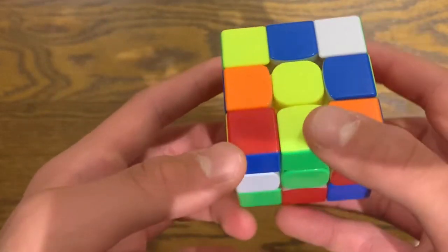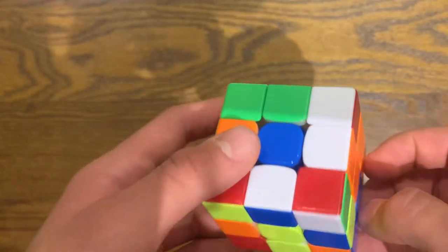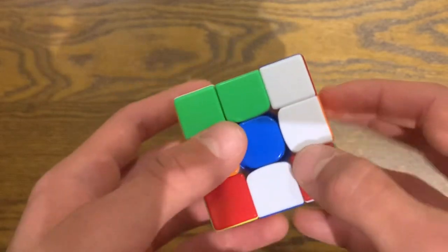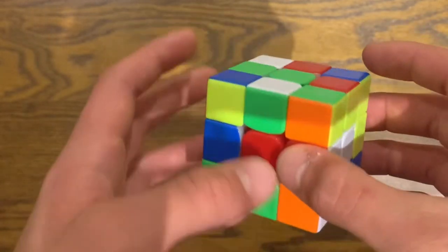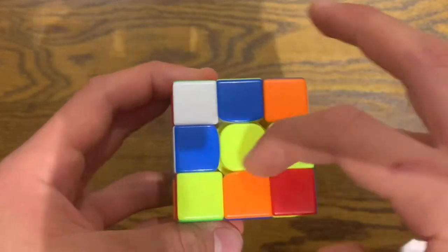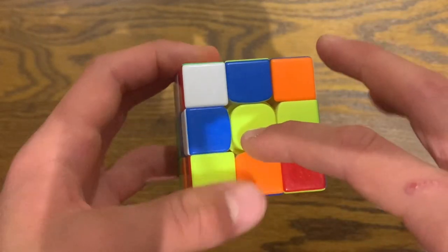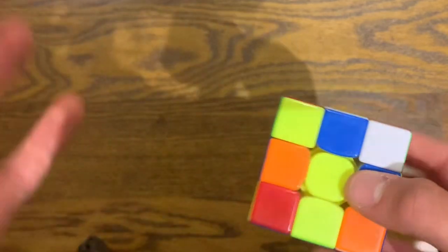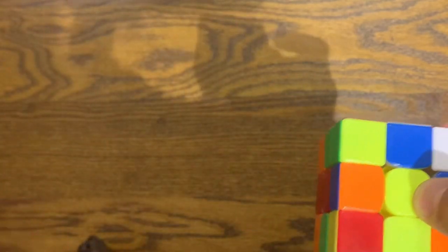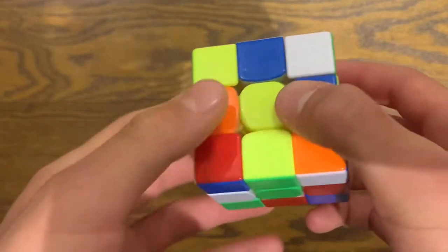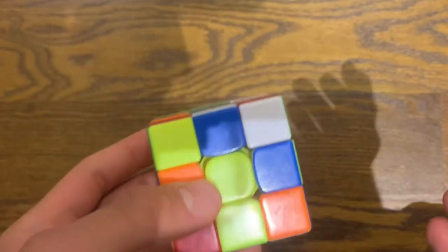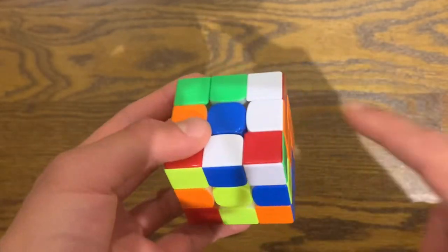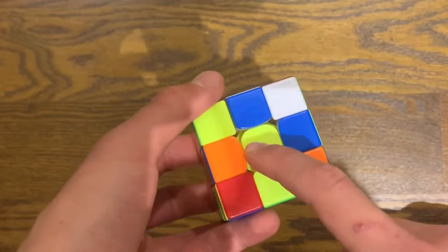So when we first start, our goal is to create a daisy cross. Now, what is a daisy cross? We have to get all of our white edge pieces all around the cube to surround the yellow center piece. So what might that look like? Well, to be honest, there is no proper algorithm or set of moves that get you to this. You just have to practice it, but it's really not hard.